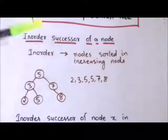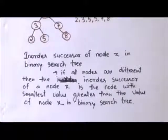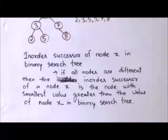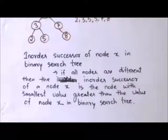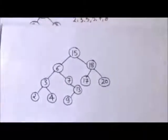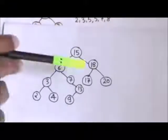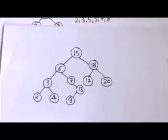The in-order successor of node 2 is node 3. In a binary search tree, we find the successor in the sorted order determined by in-order tree walk. If all the nodes in a binary search tree are different, then the in-order successor of a node X is the node with the smallest value greater than the value of node X. For example, the in-order successor of the node with value 15 is the node with value 17, because 17 is the smallest value greater than 15.